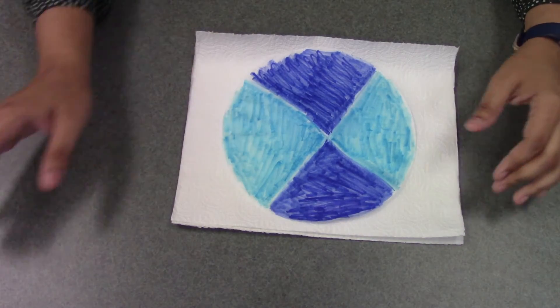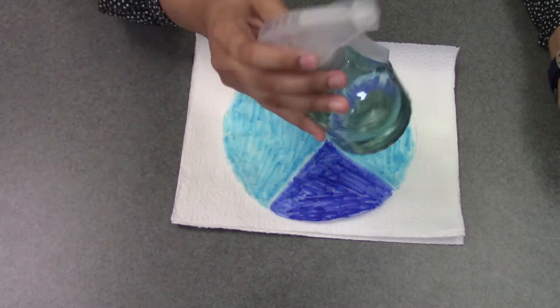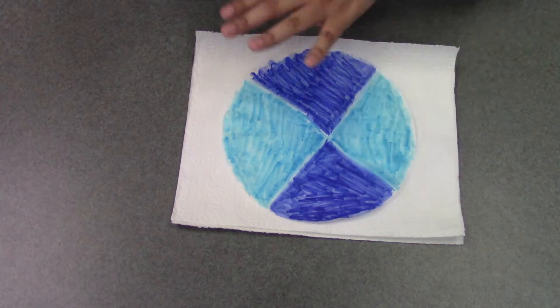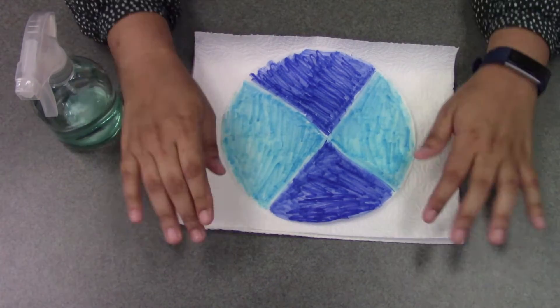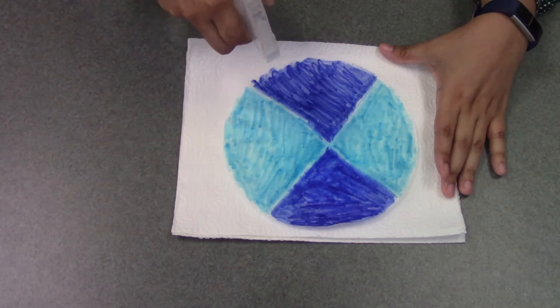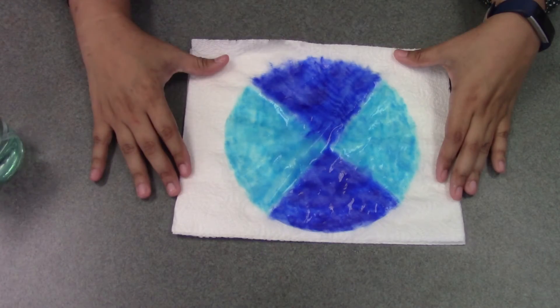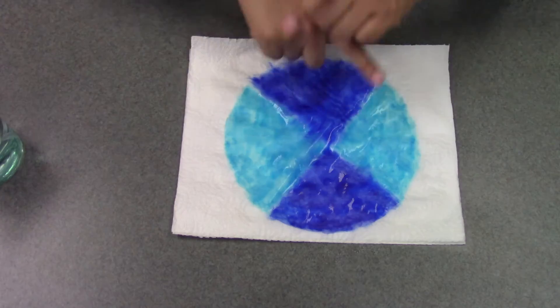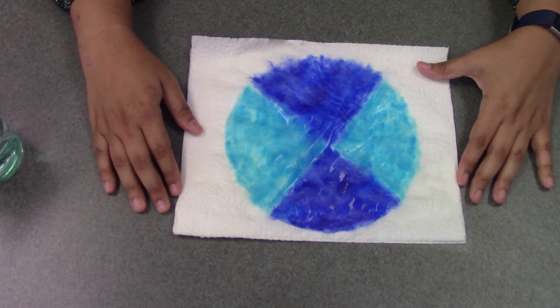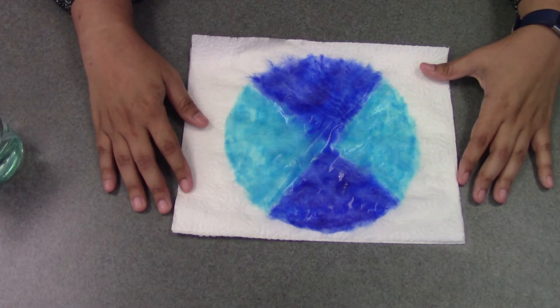Alright, so next what you're going to want to do is take your spray bottle and wet down the coffee filter. We did put some napkins underneath. And as you can see, that makes the colors bleed into each other. And then you're just going to set that aside to dry.